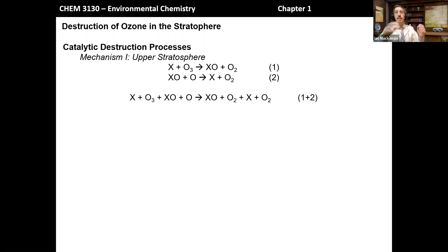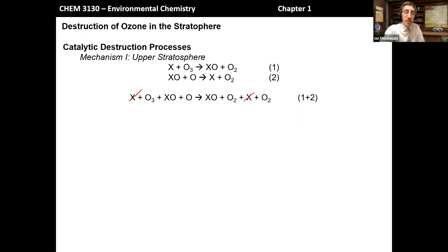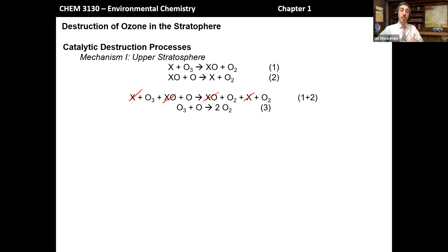When we look at reactions 1 and 2 and add them together as we would mathematical equations, anything that appears in the same form on both sides cancels out. X appears on both sides, XO appears on both sides, so we're left with a net reaction of simply O3 plus a single oxygen atom going to two O2 molecules. This looks familiar because it's actually the minor pathway for the uncatalyzed reaction — the net reaction is the same, but it's the result of multiple catalytic steps.